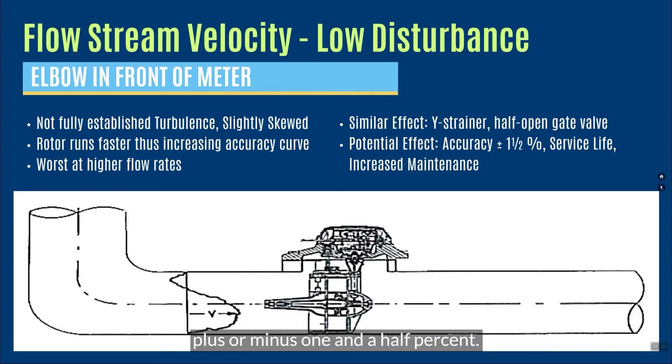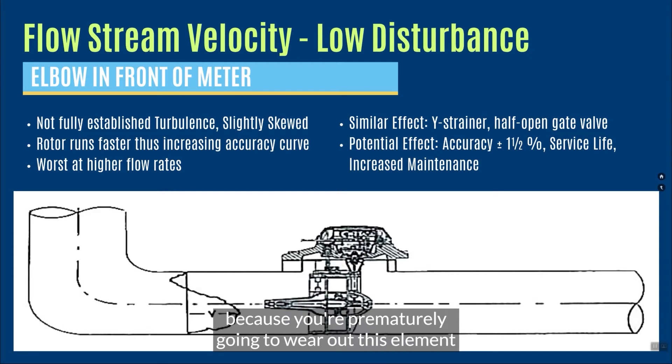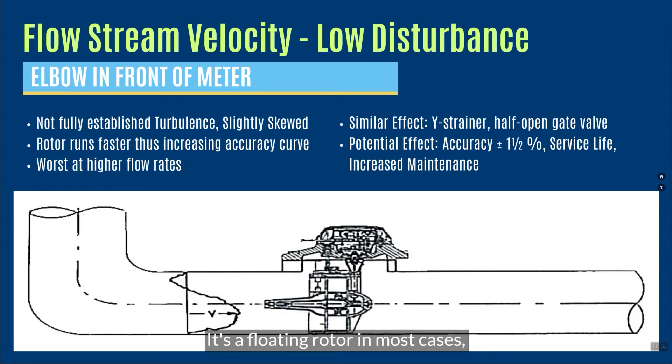This might disturb that accuracy plus or minus one and a half percent. That's revenue. It could also disturb the life of the meter because you're prematurely going to wear out this element because it doesn't have this ideal velocity profile as it approaches it. It's a floating rotor in most cases, and it can be cockeyed by this skewed velocity profile.